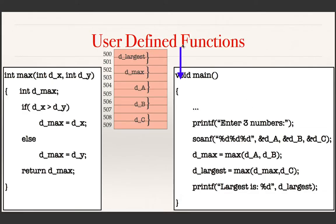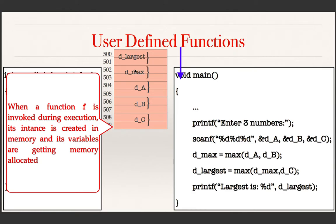Let us see how this program will be executed. This blue arrow represents that during execution the function main is invoked. When a function f is invoked during execution, its instance is created in memory and its variables are getting memory allocated. For example, here there are five variables in this function: dA, dB, dC, dMax, and dLargest. This memory layout shows an example memory allocation for these variables — for example, dB is getting these two memory locations.